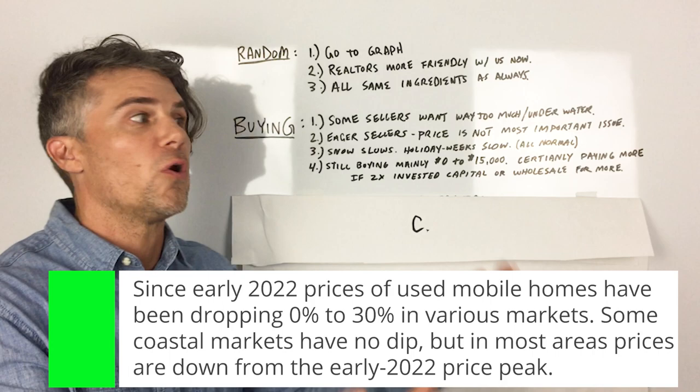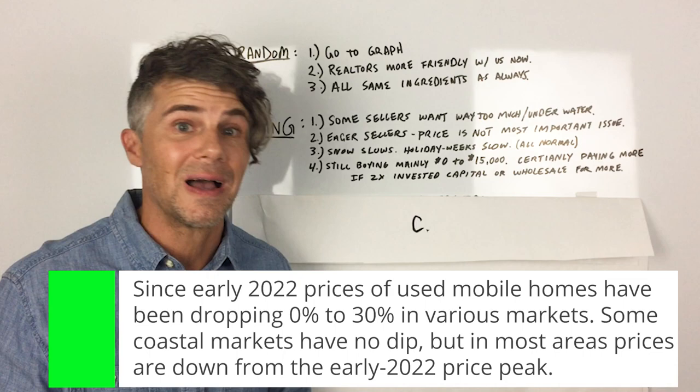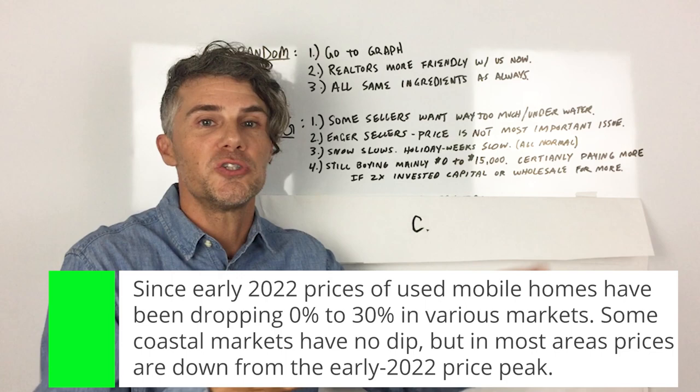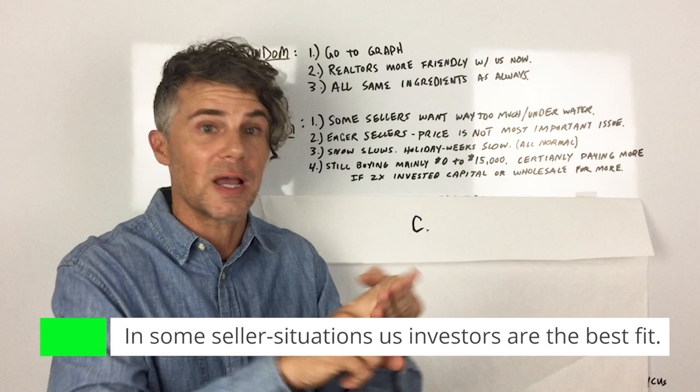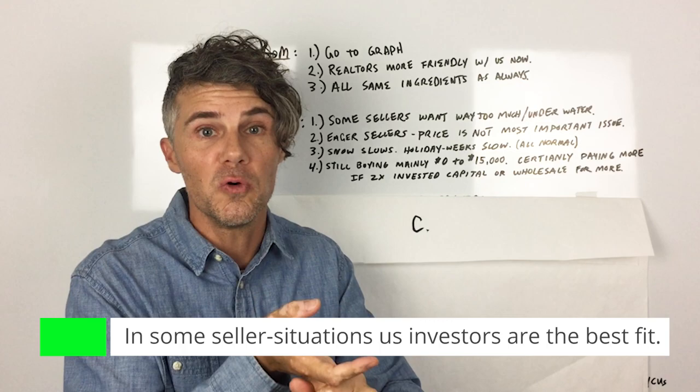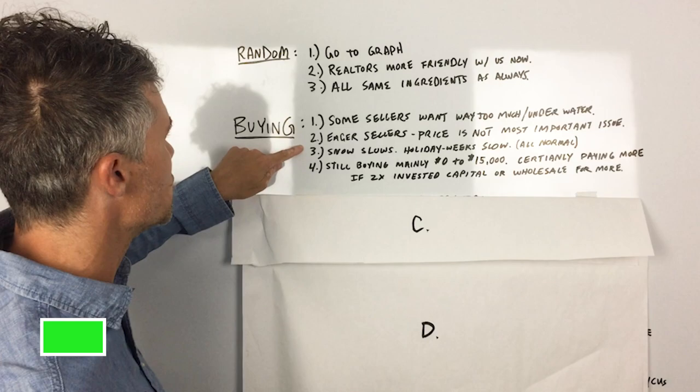Number two, there are still eager sellers out there. And these sellers are not 100%, like their most important issue isn't price. They will sell for a really good deal or terms because they want to move fast. Speed is important, or they want to stay in their home sometime after they sell it, or they have title problems, or they're embarrassed for some reason, or they're not even in the state, or their home has to be moved, or there's some other issue with the property. And so that's number two.